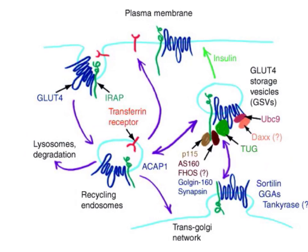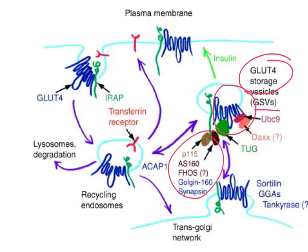GLUT1 is on cells constitutively, which means it can always take up glucose if glucose is around. On this diagram, the blue molecule is the GLUT4, and it's in a GLUT4 storage vesicle, or GSV. What happens is when you get the binding of insulin to the insulin receptor, it causes all of these molecules to be activated, and activation of these leads to the transport of this transporter to the plasma membrane.